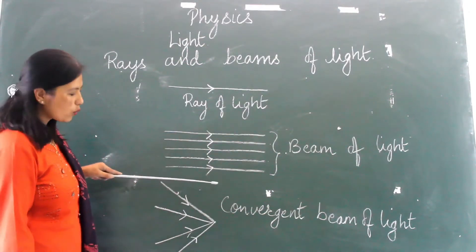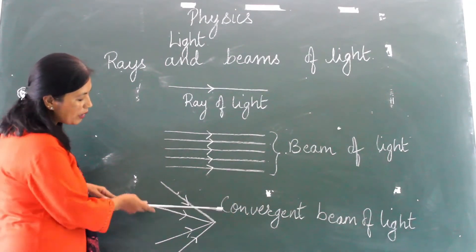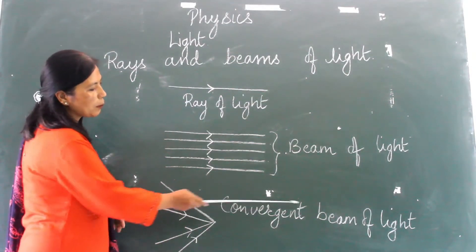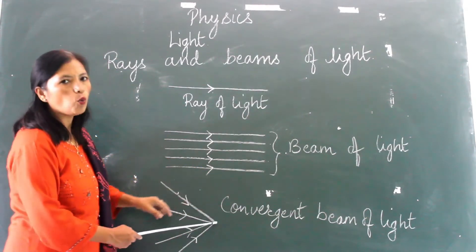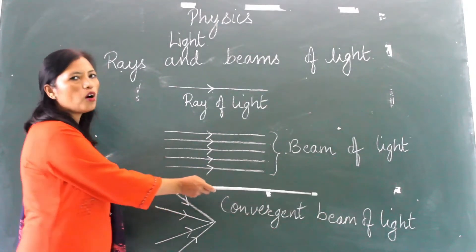When light rays from a large source converge or meet at a point, this is known as convergent beam of light. Many light rays coming together at one point—that is known as convergent beam of light.